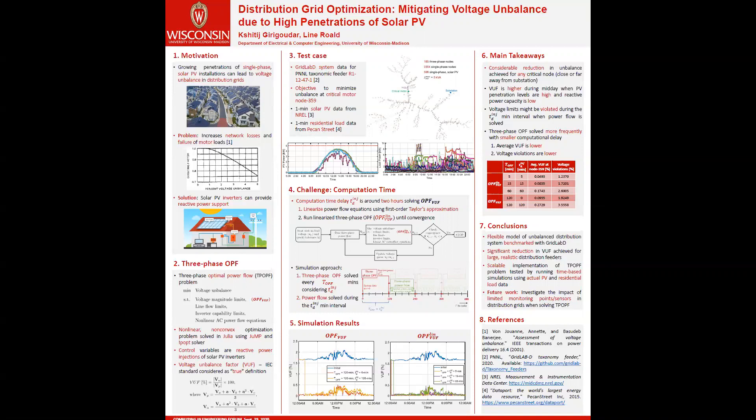Once we set up the optimization problem, we need to test it on large, realistic distribution feeders. We chose some of the large taxonomic feeders and to make the simulations more realistic, we use the actual PV and residential load data acquired from National Renewable Energy Labs and Pecan Street.